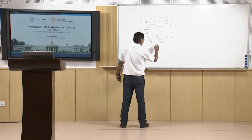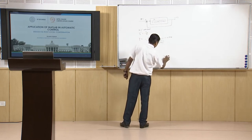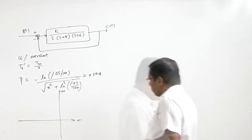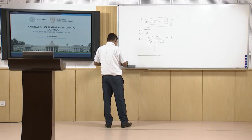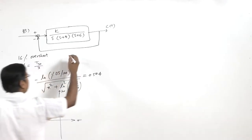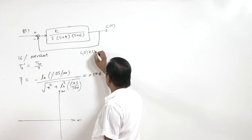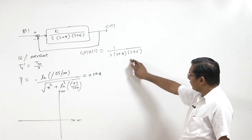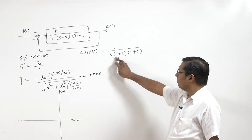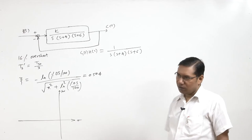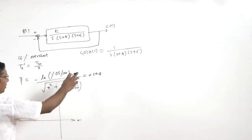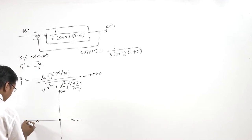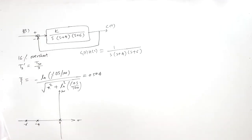Now we plot the root locus for the system. The open loop transfer function G(s)H(s) = 1 / [s(s+4)(s+6)]. We have three poles: at s = 0, s = -4, and s = -6, and all zeros are at infinity. The root locus starts at these poles and ends at infinity. We also draw the damping line corresponding to zeta = 0.504.